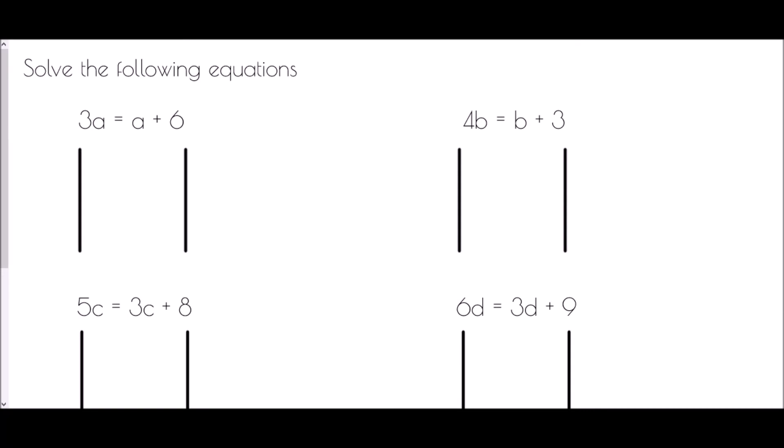In each of the questions we're going to look at today, you will notice that there is a letter on both sides of the equation. For example, 3a equals a plus 6 — the letter we want to find is on both sides. The important step is: whatever the smallest amount of the letter is, that is what you want to remove first. Once you've done that, you have a question just like ones you'll have seen previously with a single letter on one side. If you prefer the flow chart method, you can apply it too — but you must remove one set of the letter first.